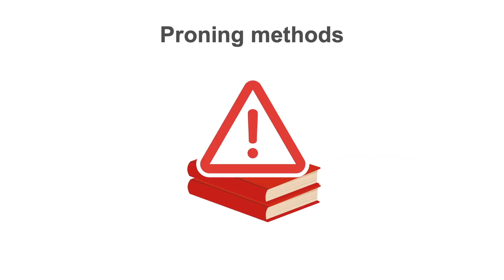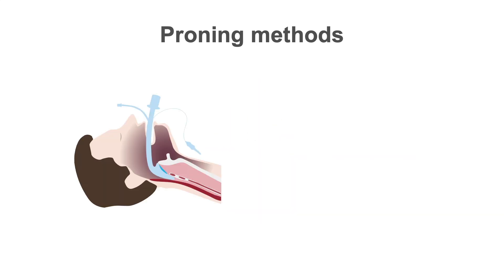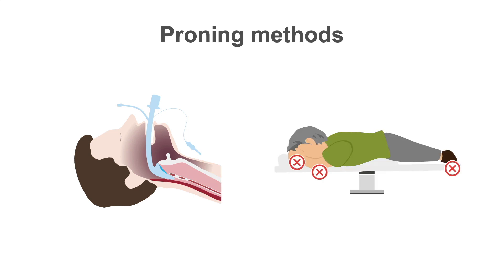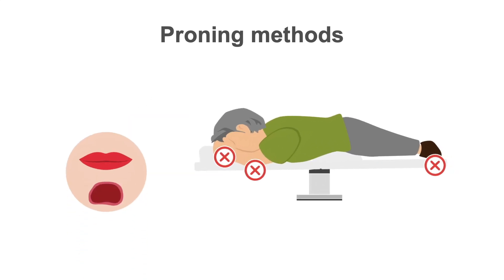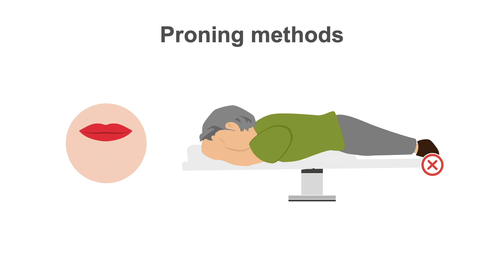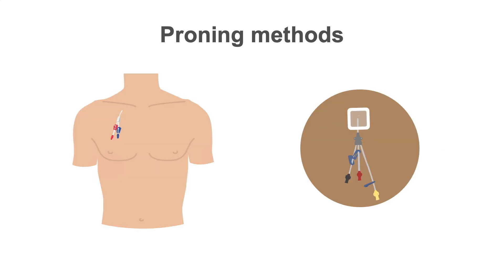The major reported complications of prone positioning from the literature are endotracheal tube obstruction and pressure injuries. Special attention needs to be made to avoid possible pressure injuries once the patient is in prone position. Some earlier studies have suggested that device loss, such as inadvertent removal of central or arterial lines, may also occur. This is less common when you have an experienced team performing the prone maneuver.